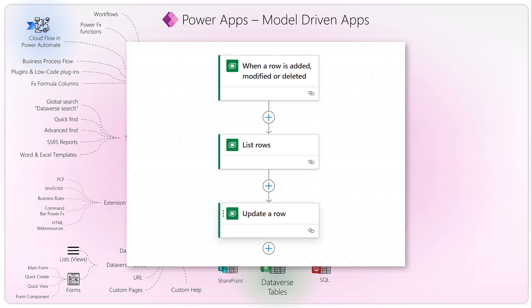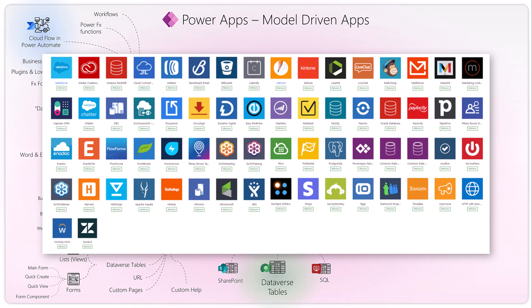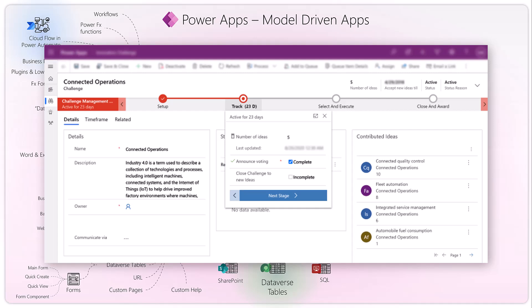The biggest advantage of cloud flows is that you can leverage thousands of connectors — you can mix and match the Dataverse connector with SharePoint, Outlook, DevOps, or whatever you need in your logic. Business process flows are more visual processes within Power Apps on records — when you open a record you see stages of your process, like a UI guidance for users to progress through the lifecycle of a record, with steps to complete within each stage.